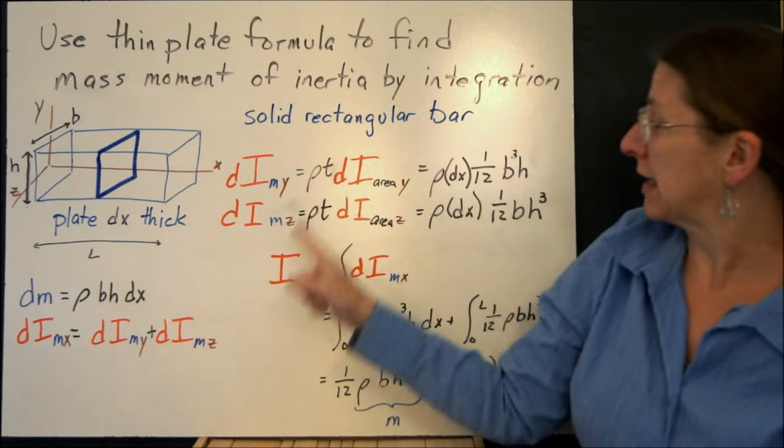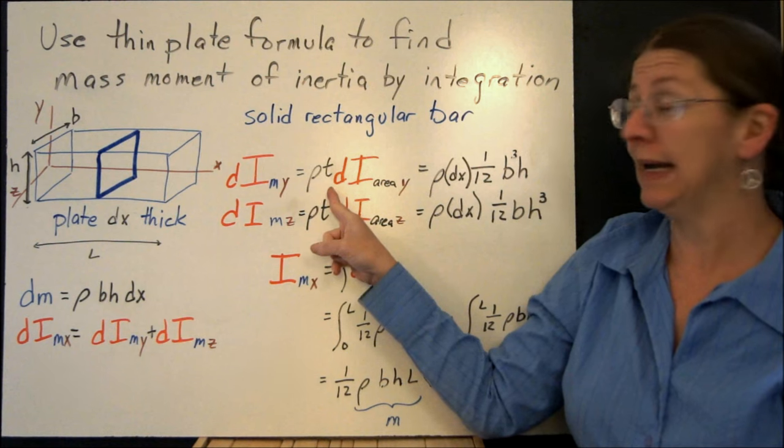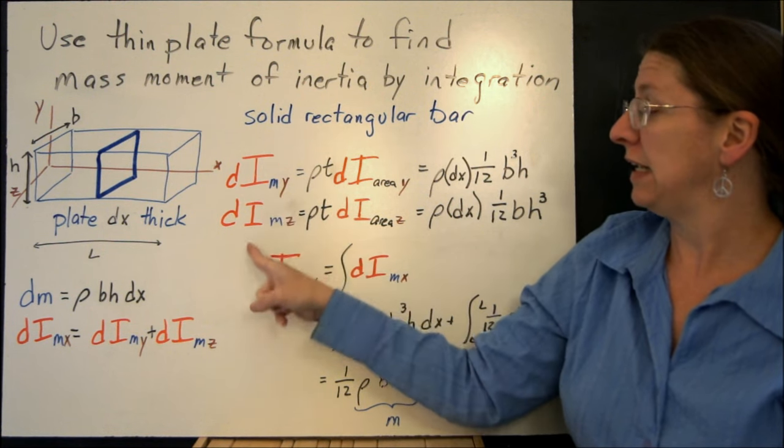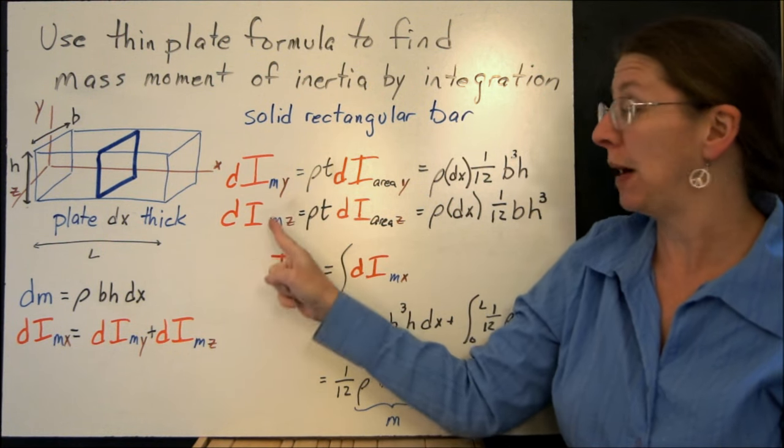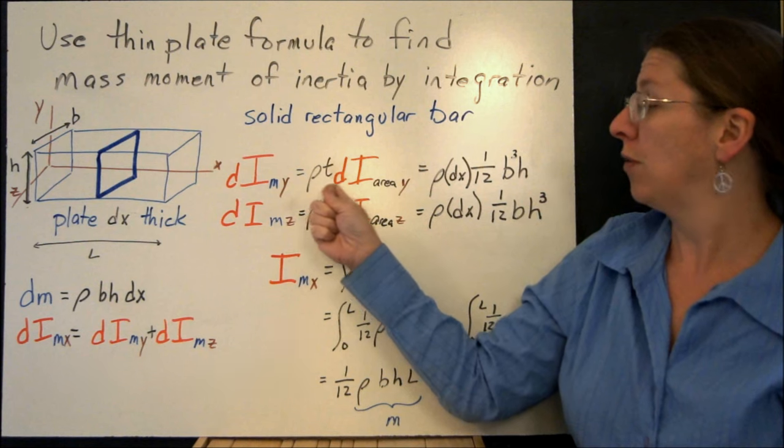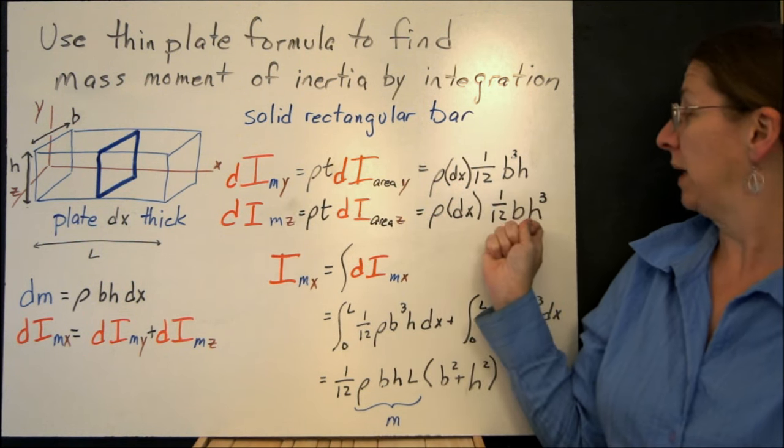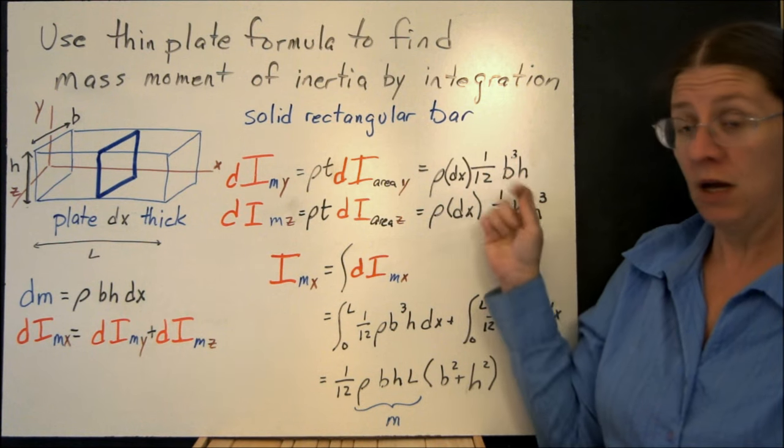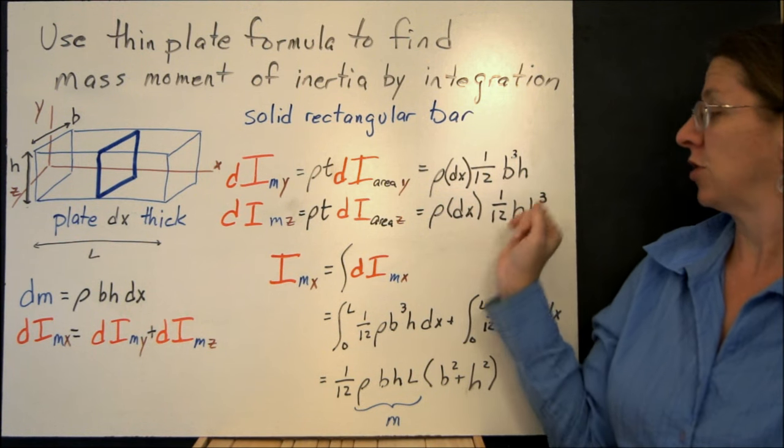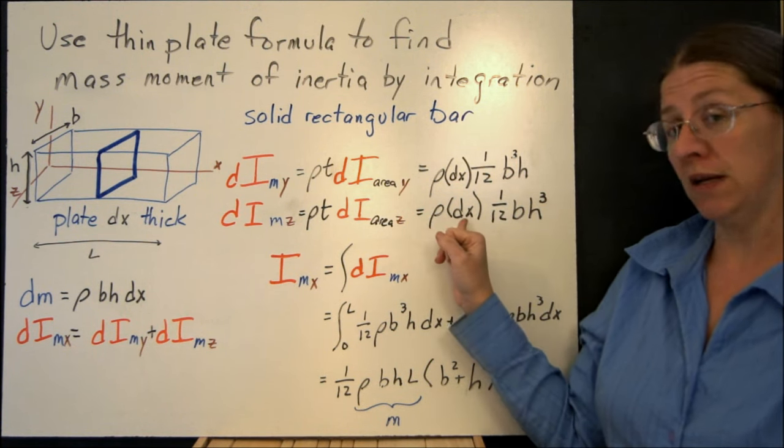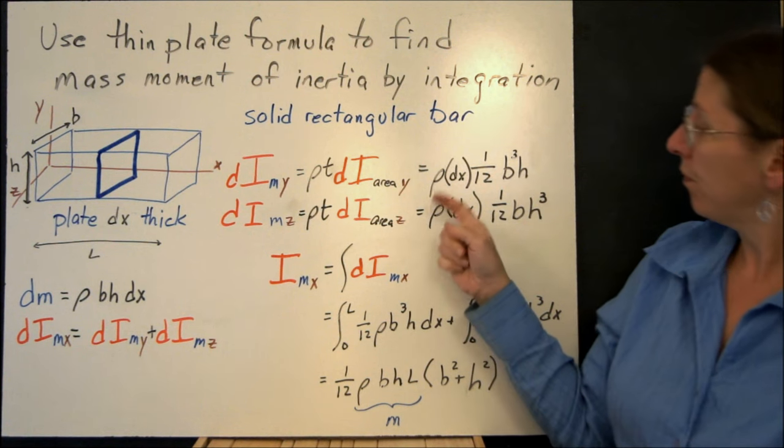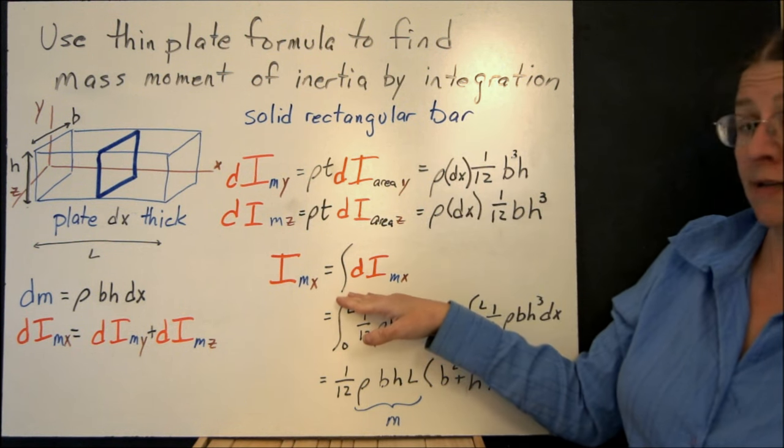So using this fact and the thin plate formula again, I have that each of these differential I_ms about the y and z-axis would be ρt times the area, 1/12 bh³ and 1/12 b³h. So here are my area moments of inertia times ρ times the thickness, ρ dx.